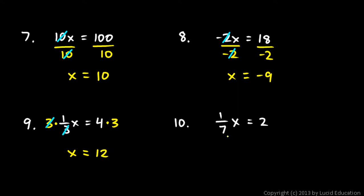Same approach to number 10. 1 seventh times x equals 2. Multiply by 7 on both sides, and on the left, the 7s cancel out, and you're left with x equals 2 times 7, which is 14.